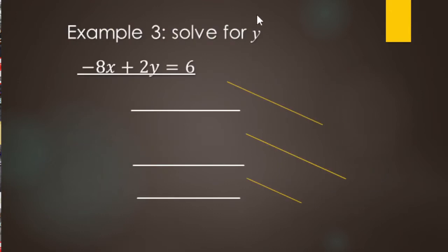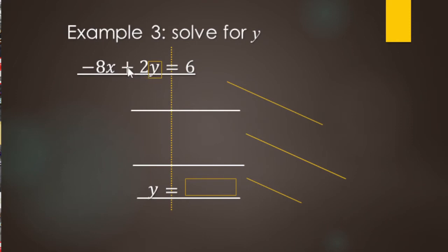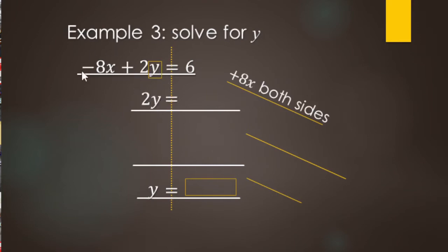Now we're solving for Y. We look at our equation and find Y — there it is. We want Y equals and then what it equals over here. Normally it's been a number, but for these it's going to be an expression. To get Y by itself, we need to undo negative 8X by adding 8X to both sides. Our left-hand side stays as 2Y; negative 8X plus 8X leaves no more 8Xs, and we now have 6 plus 8X on the right.